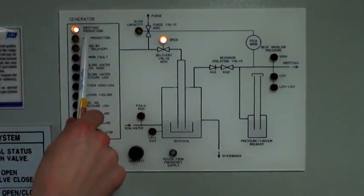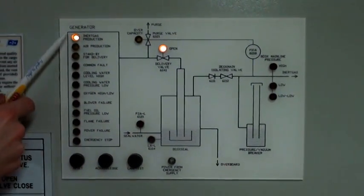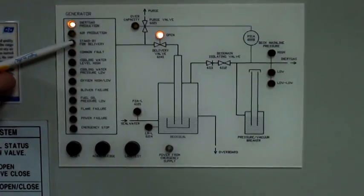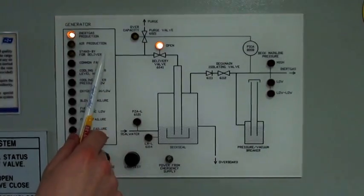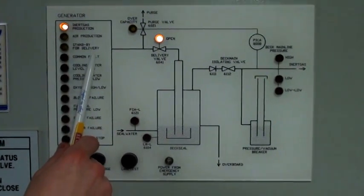We have inert gas production now. Yellow lamps indicate inert gas production, air production, or standby for delivery on deck.